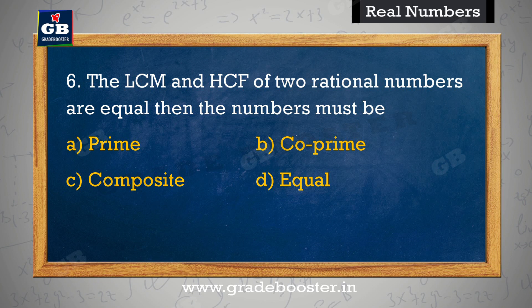If LCM and HCF of two rational numbers are equal, then the numbers must be. Do rational numbers ke LCM aur HCF saman hain, to yeh sankhya honi chahiye. A. Prime, B. Co-prime, C. Composite, D. Equal.